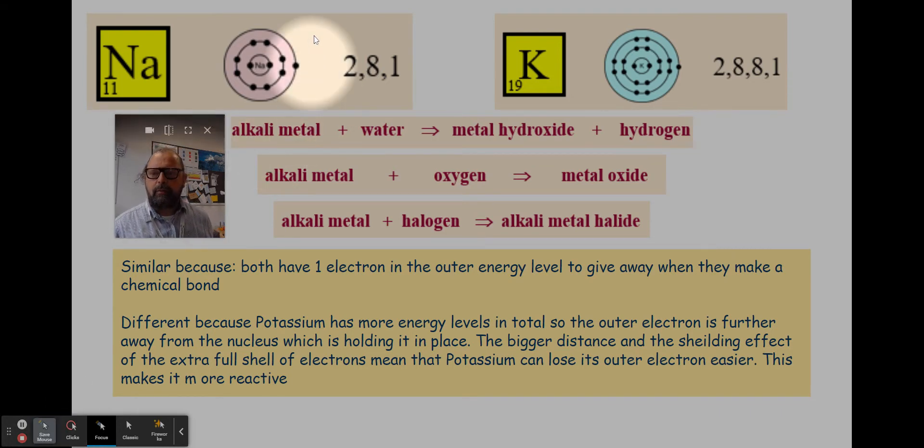You can see that we've got sodium. We already know it has a single electron in its outer shell. One electron means it's in group one. And potassium is also in group one and is the element below sodium.